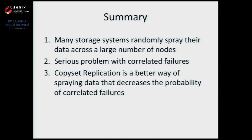In summary, the predominant form of replication today in storage systems is random replication — spraying data across many nodes. This causes big problems with correlated failures because you're likely to lose data. Copy set replication is a way that lets you control the frequency of data loss and completely control it in your cloud storage system.